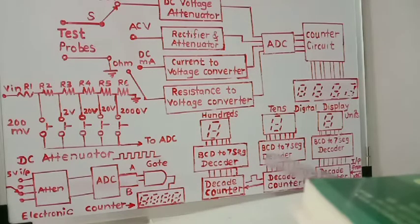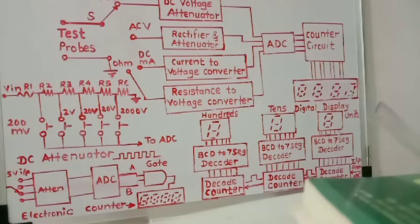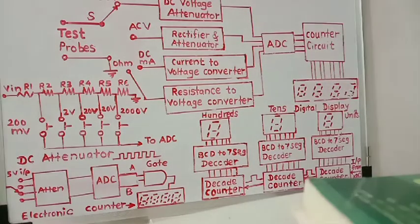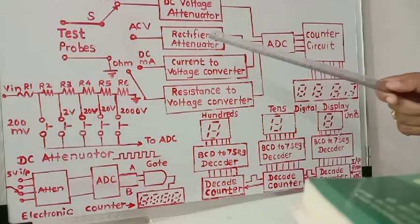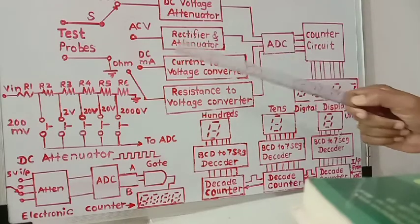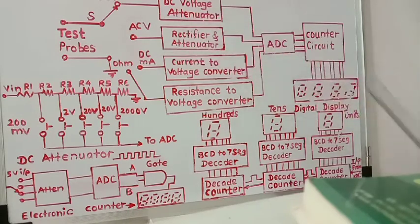The AC to DC voltage converter is nothing but a rectifier circuit. If AC voltage is applied to the digital multimeter for measurement, this rectifier circuit converts the AC voltage into DC voltage.